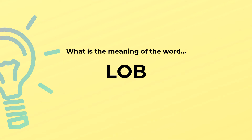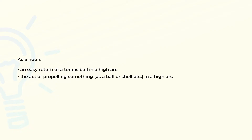What is the meaning of the word lob? As a noun: an easy return of a tennis ball in a high arc; the act of propelling something in a high arc.